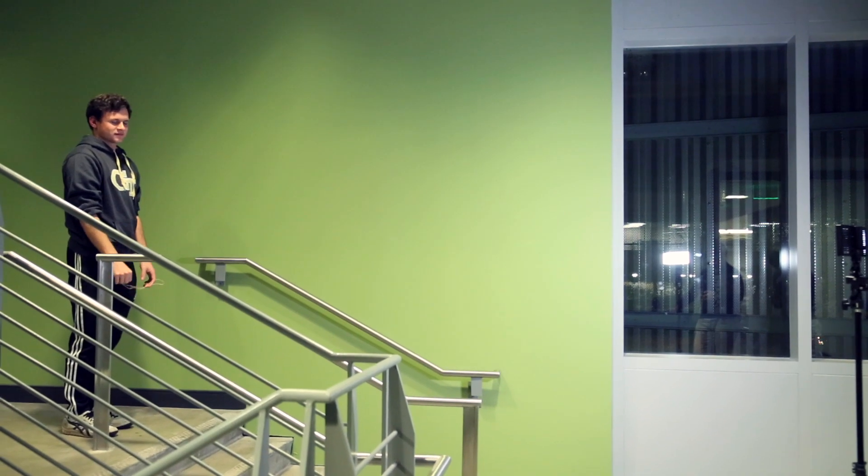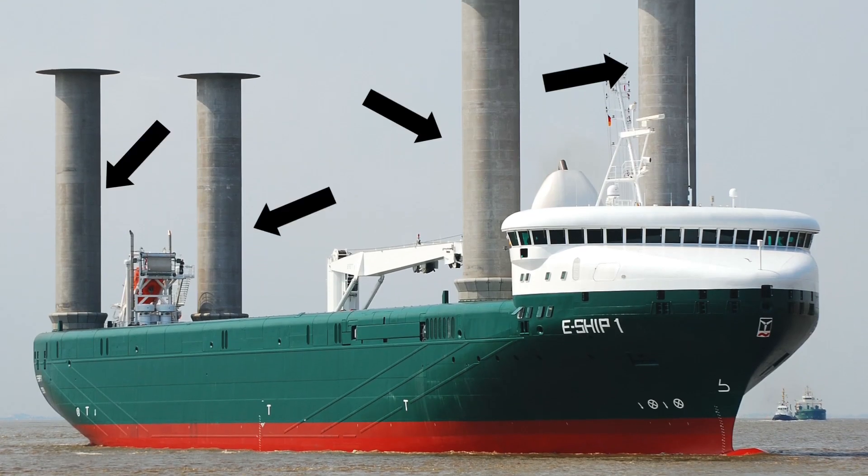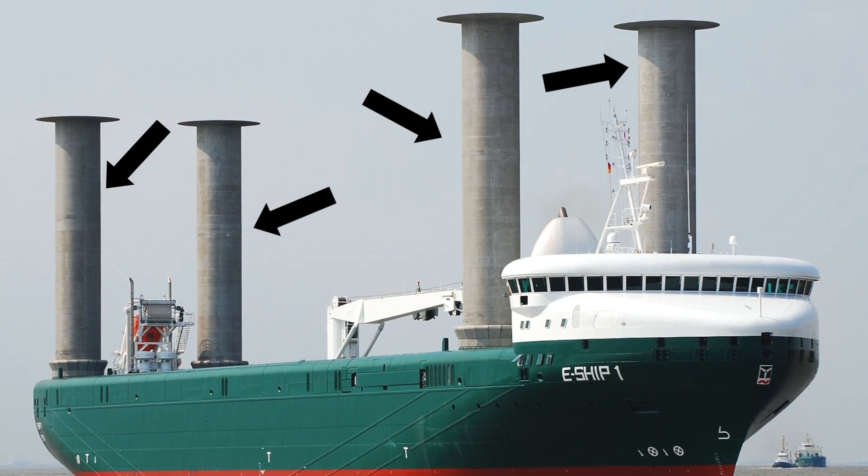In the future, the Magnus effect can be used to increase the efficiency of the rotors in ships and airplanes. Here's an example of a ship. The Flettner rotors on the ship, which are the cylinder objects, help the ship propel forward more efficiently using the Magnus effect.